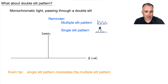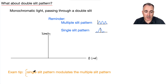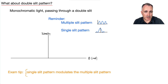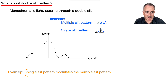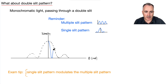Now, there exist some conditions where a double slit pattern might be a combo of these two. Sometimes you can have a single slit pattern that modulates a multiple slit pattern. That means there are conditions where you have to combine these two. I'm going to draw a single slit pattern — this airy pattern — and then fit the multiple slit pattern within it, going up and down inside the envelope.